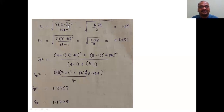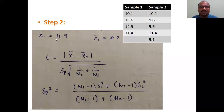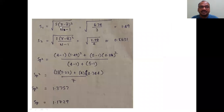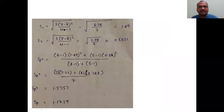For S₁, take each x value minus x̄ (the mean of that group). For example, 10.1 is an x value, 13.6 is an x value — each minus the group mean. Sum up (x − x̄)² to get 6.74, divided by 3, giving S₁ = 1.49. Similarly for S₂, calculate each value in the second group minus x̄₂, square and sum them up.